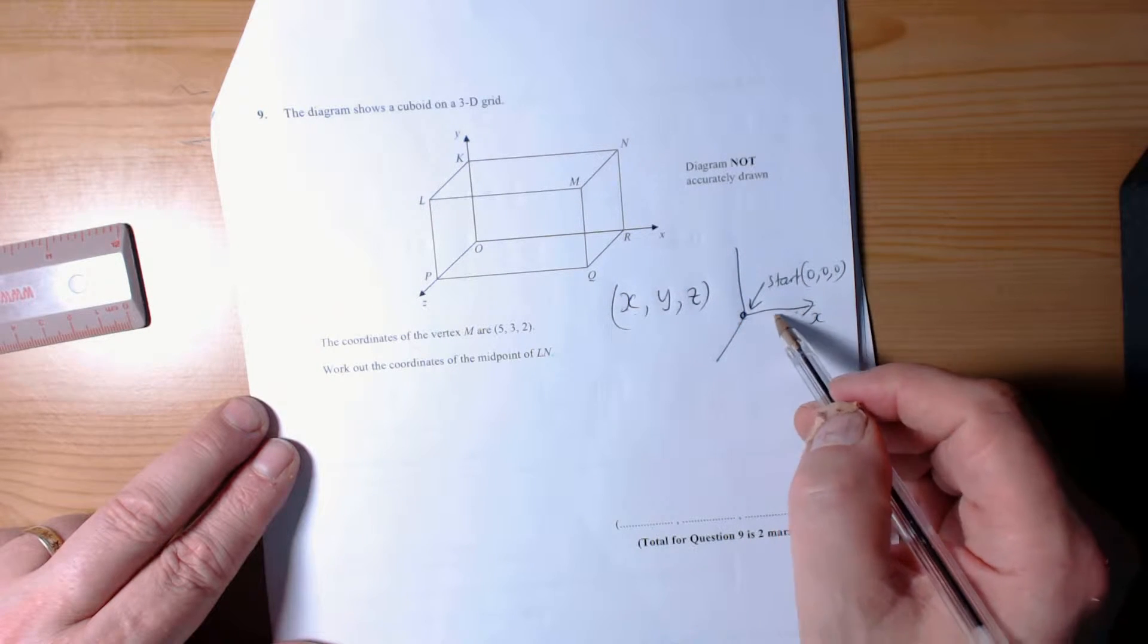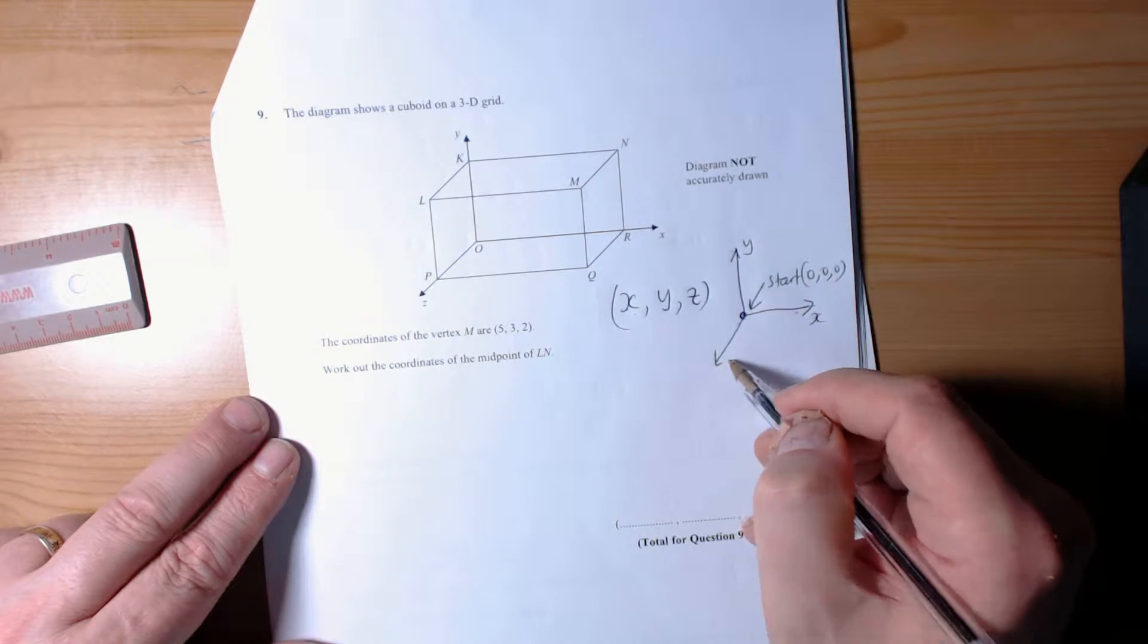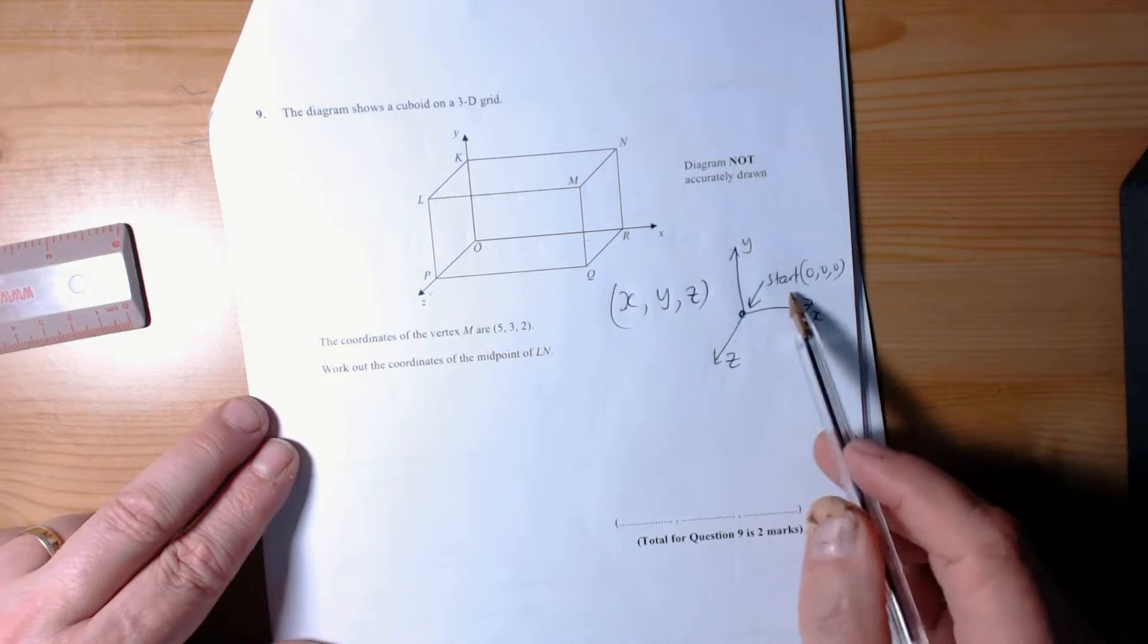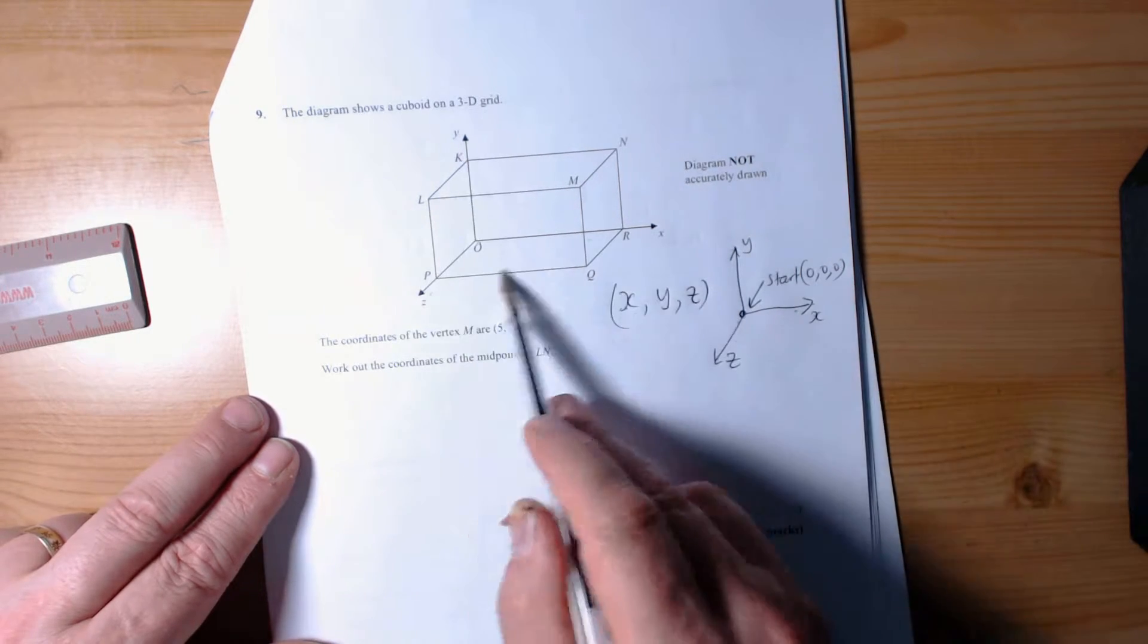So we go x, and then y, and then z. That's the way this one's been laid out. Remember, these axes can be in different orientations, just watch for what orientation they've used in the question.